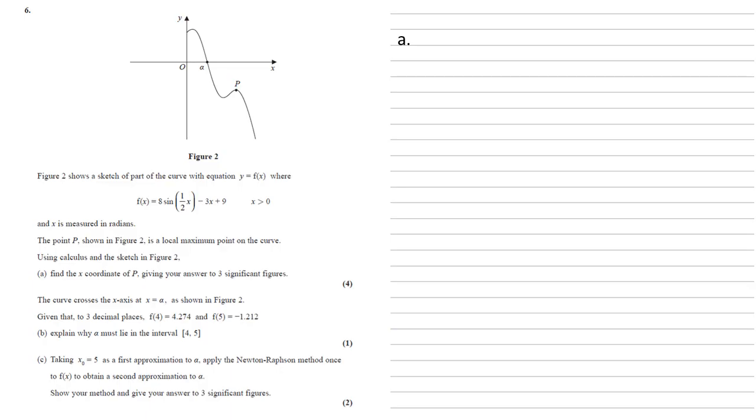So as P is a local maximum, we're going to take our f of x, differentiate it to get f dash x, and we're going to set this equal to 0.